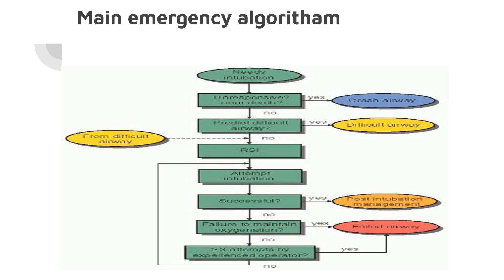To summarize the main emergency algorithm: first, decide whether the patient needs intubation. If so, assess consciousness and GCS. If the patient is unresponsive or near death, proceed directly to the crash airway algorithm. Otherwise, perform airway assessment to determine whether a difficult airway is anticipated. If a difficult airway is predicted, use the difficult airway algorithm; if not, proceed with rapid sequence intubation.